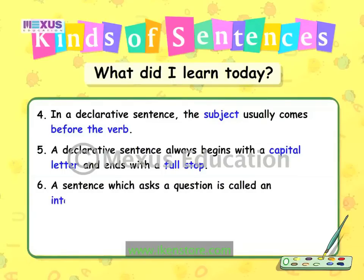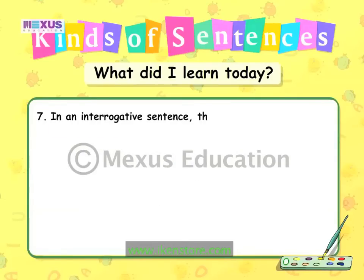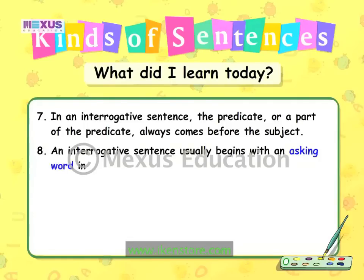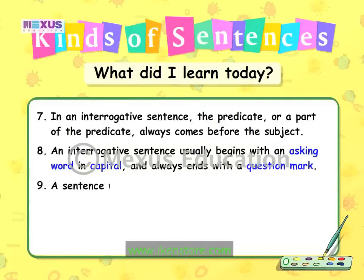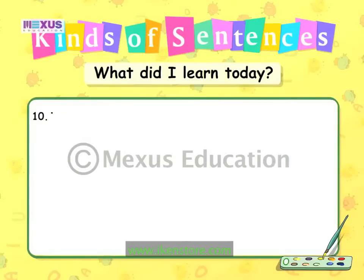A declarative sentence always begins with a capital letter and ends with a full stop. A sentence which asks a question is called an interrogative sentence. Example: Did you go to the park? In an interrogative sentence, the predicate or a part of the predicate always comes before the subject. An interrogative sentence usually begins with an asking word in capital and always ends with a question mark. A sentence which gives an order or makes a request or an entreaty is known as an imperative sentence. Example: Go home quickly. The subject you is not mentioned in an imperative sentence.